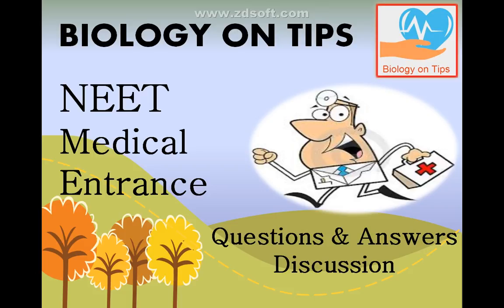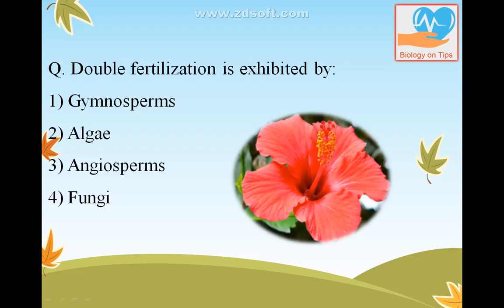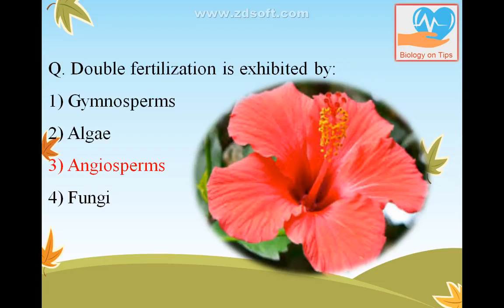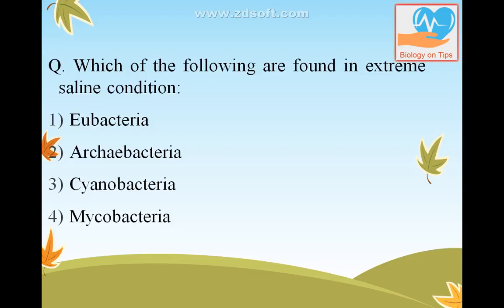The first question: double fertilization is exhibited by — the answer is angiosperms. Angiosperms are categorized by having the process of double fertilization, which includes syngamy and triple fusion.